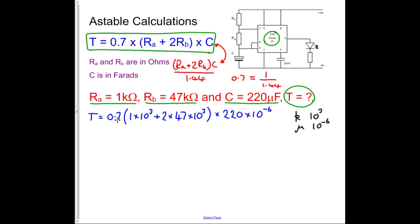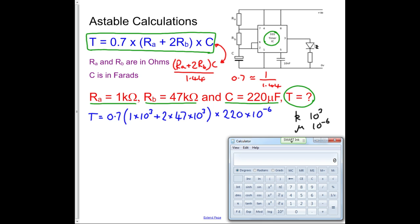So if we find out Windows calculator, and we'll have a go at calculating this. So we do 0.7 multiplied by, being careful to use the brackets properly. So it's 1 exponent 3 plus 2 times 47 exponent 3, close brackets, multiplied by 220 exponent minus 6 equals.